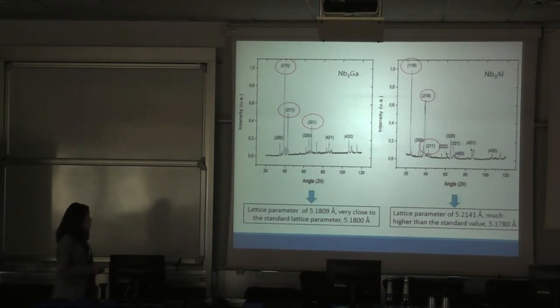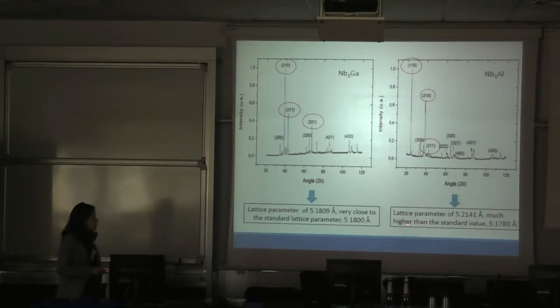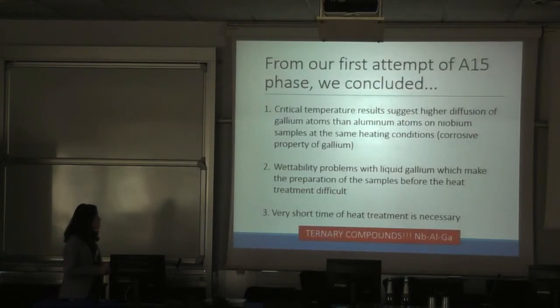During the long time, we give more time to the gallium or aluminum atoms to diffuse on niobium surface. The patterns of x-ray diffraction we can see here for niobium-3-gallium, the main planes are present. And if we compare the lattice parameters with the standard value, it's very close. While for niobium-3-aluminum, we also see the main plane of diffraction, but the lattice parameter is much higher than the standard value.